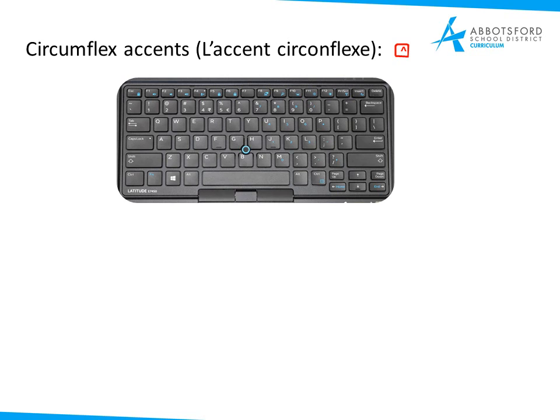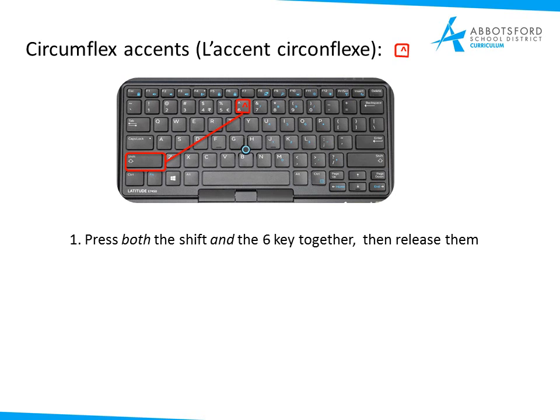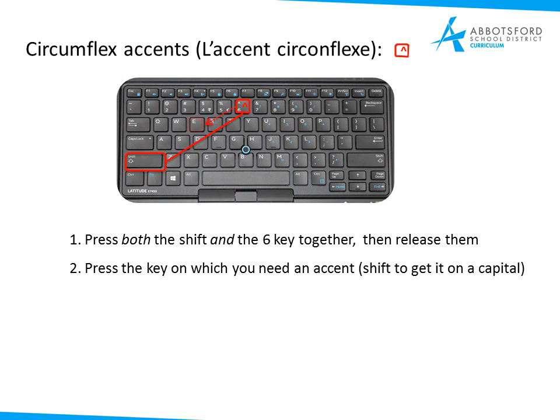For the circumflex accent — l'accent circonflexe — same deal. You'll notice it's above the six key. Since characters above the numbers at the top of the keyboard require Shift to access, we do the same here. Press both Shift and the six key together, then release them, and you're ready to select the letter you want to put your circumflex on. In French it's often an E, but it could be an A or an O — various letters depending on the language. Use Shift to place it on a capital letter.